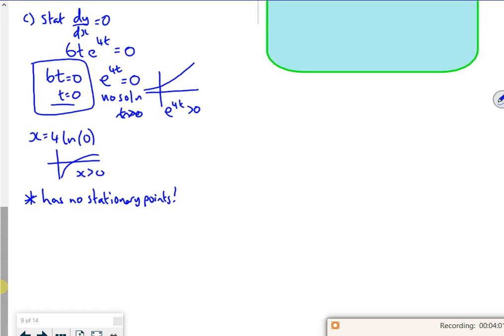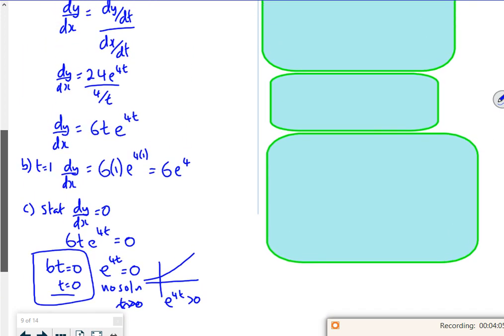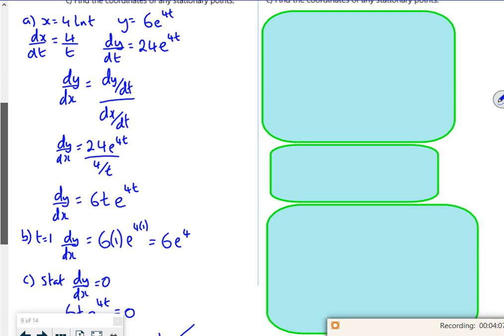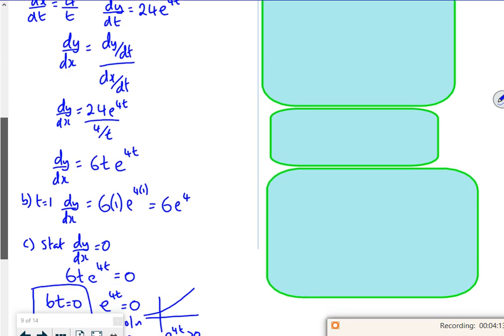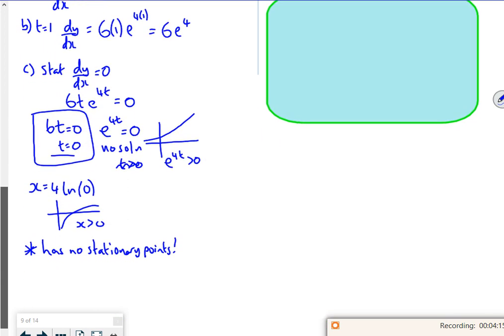No stationary points. It's a bit cheeky, isn't it, really? So you're quite bound if it's t is nothing, that does. But actually, if I try and get the coordinate of it, the 4 ln 0 doesn't work.